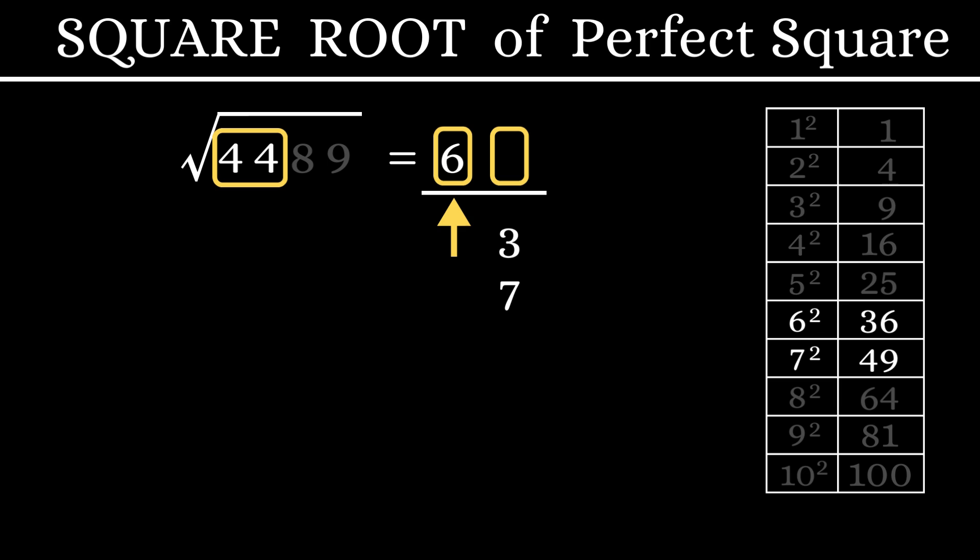Let's note it down here. Our answer should be either 63 or 67. To find out that, let's multiply this tens digit 6 with the next consecutive number 7. 6 into 7 is 42. Now, we will compare this 44 with the 42. Since 44 is greater than 42, our answer should be the greater number, which is 67.